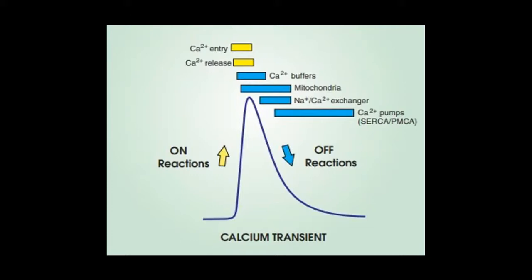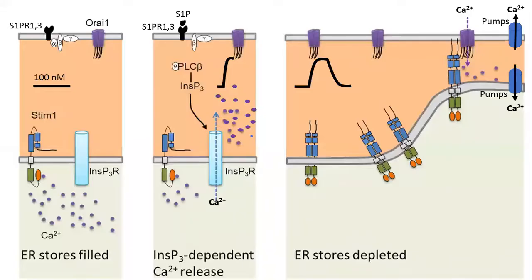In our cells we have the sphingosine-1-phosphate receptor, which is a phospholipid receptor, and there is a calcium channel which is ORAI1.